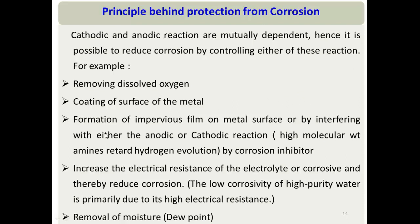Another approach is using corrosion inhibitors, which we will discuss at length in subsequent lectures. One type of corrosion inhibitor forms a film on the metal surface so iron ions cannot reach it directly. Another type reduces the anodic reaction rate, and yet another type reduces the cathodic reaction rate — all ultimately reducing the overall corrosion rate.